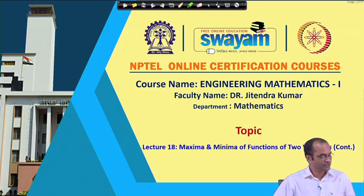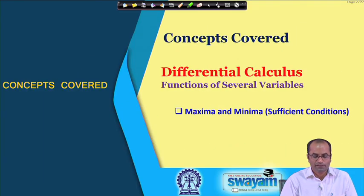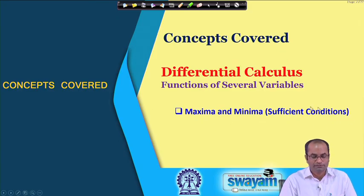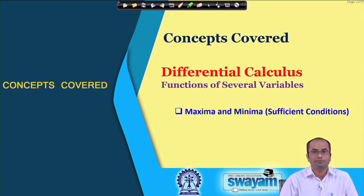Welcome back to the lectures on Engineering Mathematics 1. This is lecture number 18. We will be talking about the maxima and minima of functions of two variables. In particular, today we will be talking about the sufficient conditions that will be used for characterizing the critical points — whether a point is a local maximum, local minimum, or a saddle point.